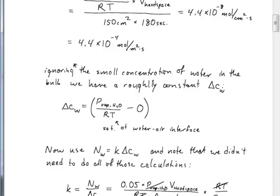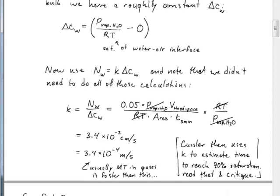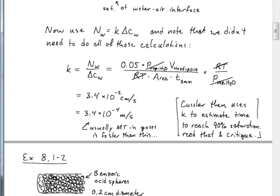Kessler notes this is a bit slow, but that's not really a major concern — perhaps those numbers were made up. Kessler then uses this K to estimate the time required to reach 90% saturation. That estimate will be a little less reliable because of the error we made by assuming the bulk concentration was zero throughout. Probably not too much of an error, but if you really want to know precisely how long it takes to reach a given saturation level, you'd want to include that initial 5%.